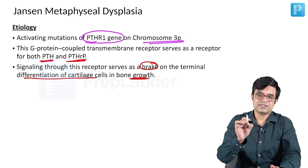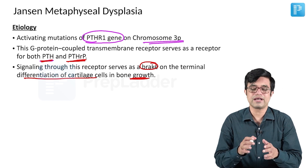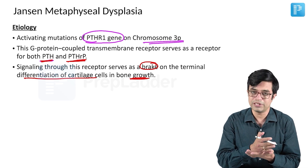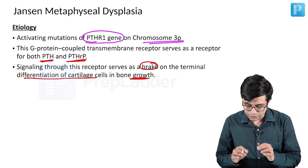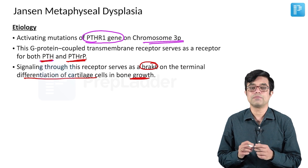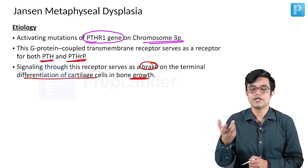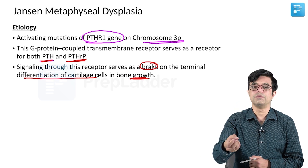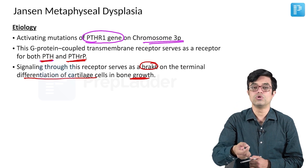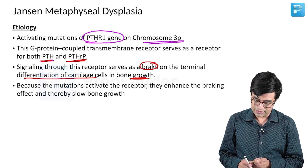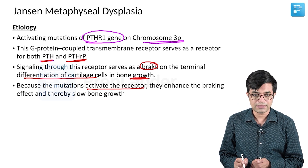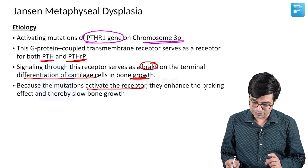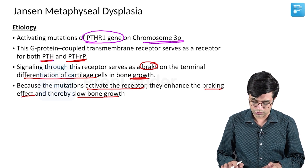Signal through this receptor serves as a brake on the differentiation of cartilage cells in bone growth. If this critical braking step is disrupted, the formation of endochondral ossification will be affected. Due to mutations in the PTHR1 gene, without there being PTH or PTHrP, the automatic brake will be applied and bone will not grow. These mutations cause constitutive activation of the receptor — a gain-of-function mutation — which enhances the braking effect and thereby slows bone growth.